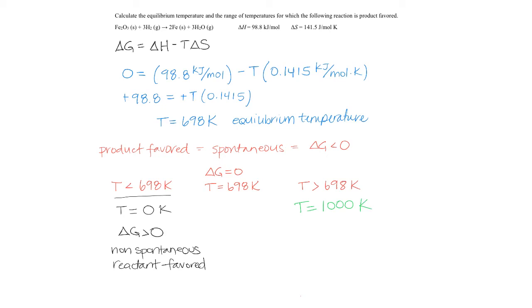If T is equal to 1,000, then when we multiply, we end up with 141.5 kilojoules per mole Kelvin over here in the entropy term, which then makes the delta G less than 0, which is spontaneous or product favored.